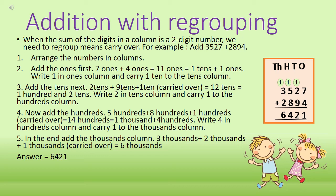Next, we add the hundreds column. We have digits 5 and 8, and 1 carry over. 5 plus 8 is 13, plus 1 is 14. So we get 14 hundreds, which equals 1,000 plus 400. We write 4 in the hundreds column and carry 1 to the thousands column. Finally, we add the thousands column. We have digits 3 and 2, plus 1 carry over. 3 plus 2 is 5, and 5 plus 1 is 6. So we get the answer 6,421.